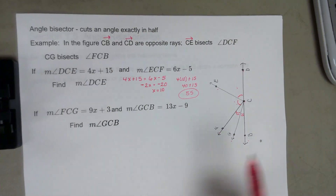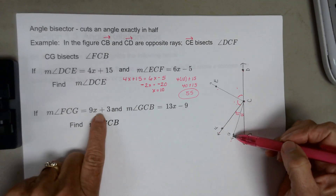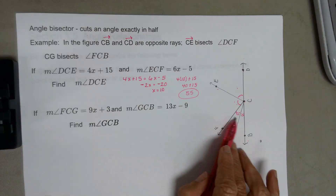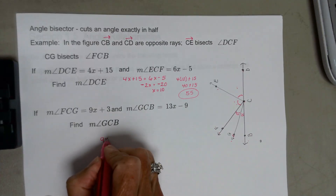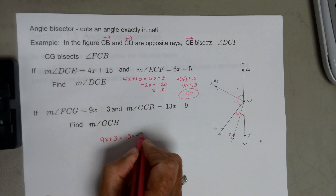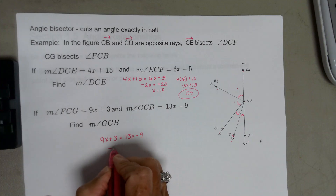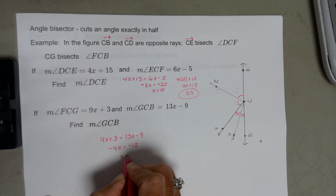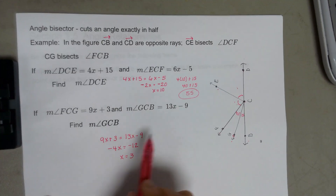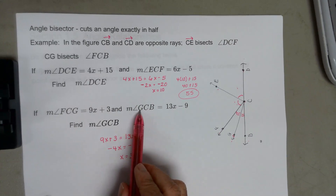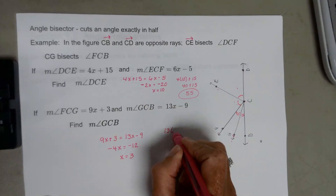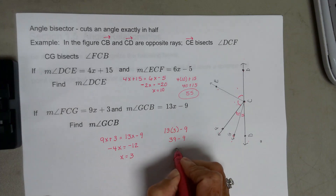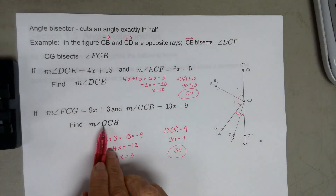Same illustration: angle BGC is 16x − 4 and angle CGD is 2x + 13. They're congruent angles, so set them equal and solve. 16x − 4 = 2x + 13... wait, actually finding x so that BGD is a right angle: (16x − 4) + (2x + 13) = 90. Combining: 18x + 9 = 90, so 18x = 81, giving x = 4.5. Plugging back in for GCB: 13(3) − 9 = 39 − 9 = 30°.